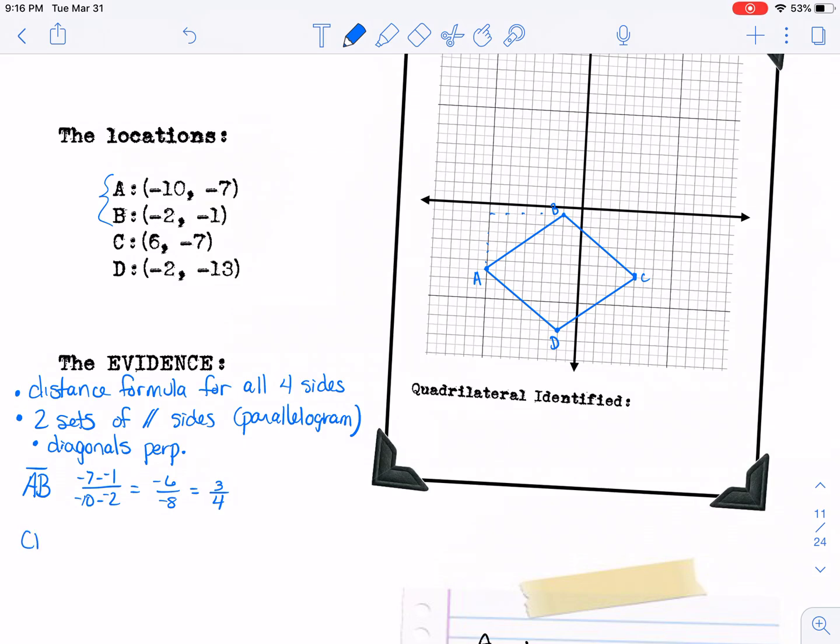And then I'm going to find the slope of CD because that's opposite AB, so I want that slope to be the same. So then I'll use these two points and do the y minus the y. So negative 7 minus negative 13 over 6 minus negative 2. And I like to change those. So negative 7 plus 13 gives you 6, and then on the bottom, 6 plus 2 is 8. So that is 3 fourths. So those two are parallel. So I'm going to mark that on the graph that those two are parallel.